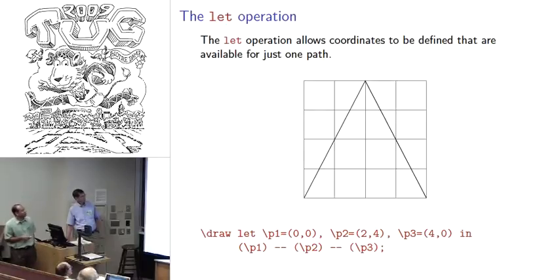We also have a path operation called let. At first glance this seems not terribly useful, but what let allows us to do is define a coordinate that's used for just one path - a temporary, throwaway coordinate. We're going to draw on this path where we let P1 be this point, P2 be this point, P3, and so on. Now the Ps in this case, that's required. The naming strategy 1, 2, and 3 - we can use anything there. But the macro that we use to define these points has to begin with a P. Then we can use them just as we would as a coordinate.